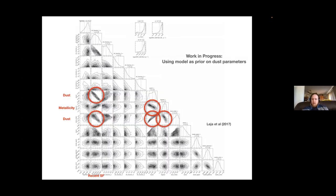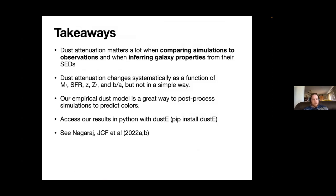The work in progress - what we're working on now is going back to these degeneracies that sort of prompted us to look at dust in the first place. We can now use our model of the dust to narrow down a priori what we expect the galaxy's dust properties to be each time we do this fit, and so we hope this will improve inferences from SED fitting down the line. Here are the takeaways: dust attenuation matters - it matters as a function of these quantities, but not in any simple way that you could just put in a power law. The empirical dust model is a very nice tool for post-processing galaxies, and you can access them on Python immediately. So that's it. Thank you.